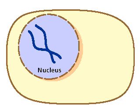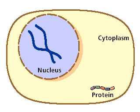In eukaryotic cells, the DNA is contained in the cell's nucleus, whereas proteins are made in the cell's cytoplasm.